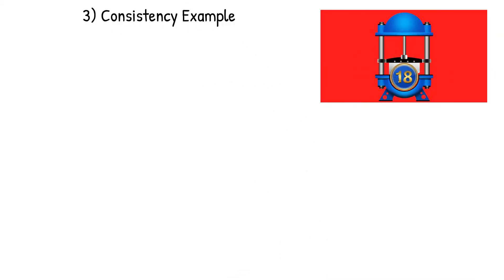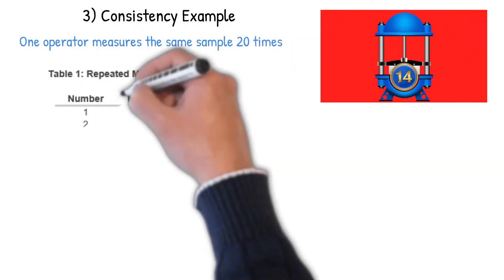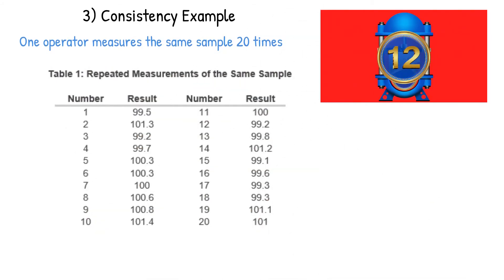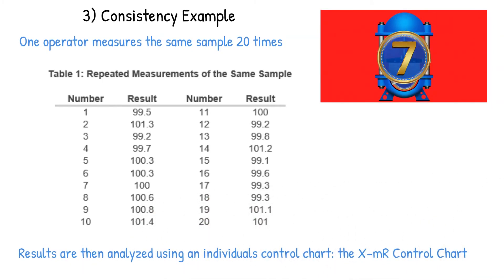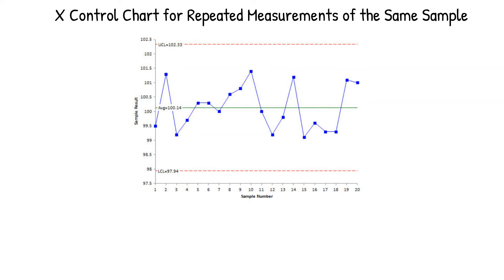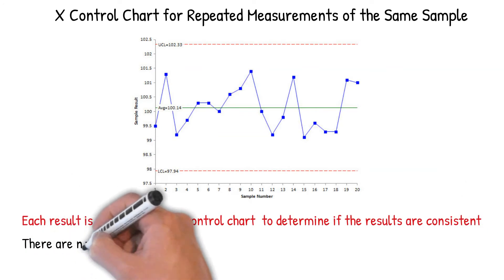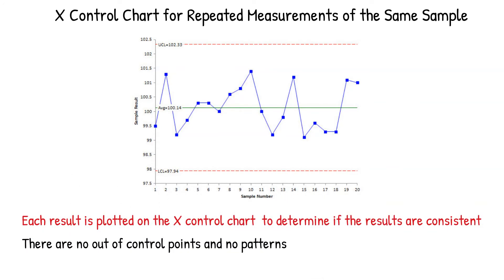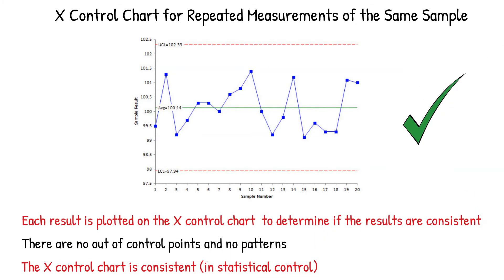Let's take a look at an example. We're going to measure the same sample 20 times — same operator measuring the same sample — and here are the results. We'll take those results and analyze them using an individuals control chart. Looking first at the X control chart, where you plot the repeated results, you calculate an average and control limits. There are no out-of-control points and no patterns, so the X control chart is consistent — it's in statistical control.